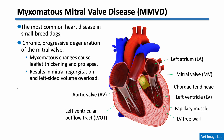Myxomatous mitral valve disease, or MMVD, is the most common acquired heart disease in small breed middle-aged to older dogs. It's a chronic progressive degeneration of the mitral valve, where the leaflets gradually thicken due to myxomatous changes. These changes lead to mitral valve prolapse and, over time, to mitral regurgitation. As a result, blood flows backward into the left atrium during systole, causing volume overload on both the left atrium and left ventricle. Because this process progresses gradually and often silently, a systematic echocardiographic protocol is essential for accurate staging and monitoring.